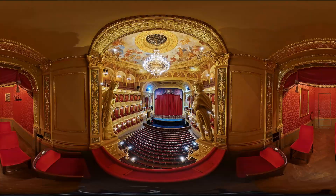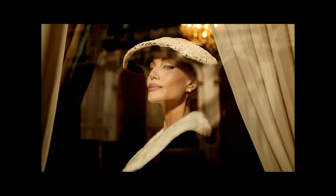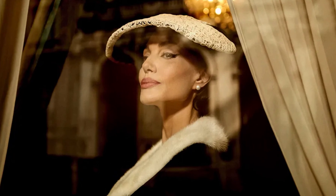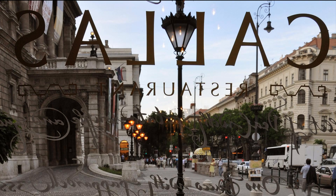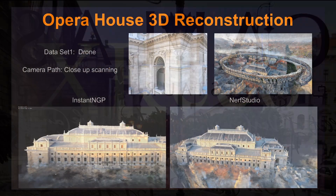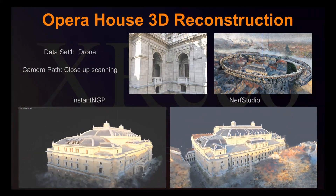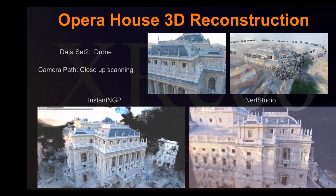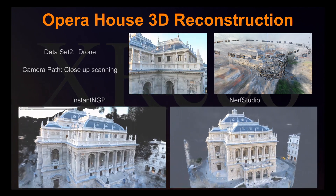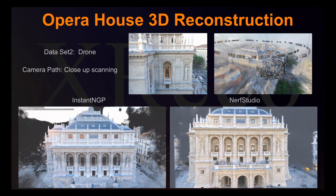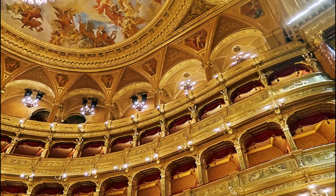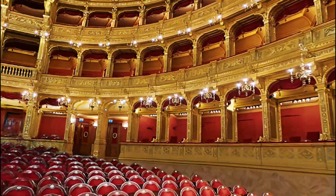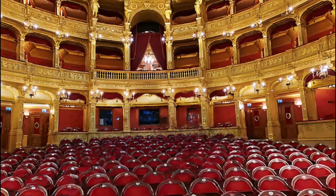We also captured and virtually reconstructed the same opera house in Budapest, where Angelina Jolie recently filmed a part of her new role about the life of the world-famous opera singer. To achieve this, we deployed 360-degree XR cameras and drones to scan the interior and the exterior of the landmark building, and subsequently reconstructed them using neural radiance fields as well as 3D Gaussian splatting techniques.